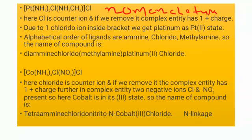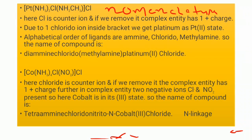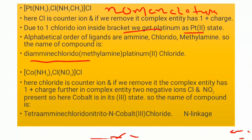Now in this part we have to name the given compound [Pt(NH₃)₂Cl(CH₃NH₂)]Cl. The counter ion is Cl⁻ (chloride). If we remove it, the complex entity has one positive charge, due to one chloride ion inside the bracket. Platinum is in the 2+ state. The alphabetical order of ligands is: amine, chlorido, methylamine. The name of the compound is diamminechlorido(methylamine)platinum(II) chloride.